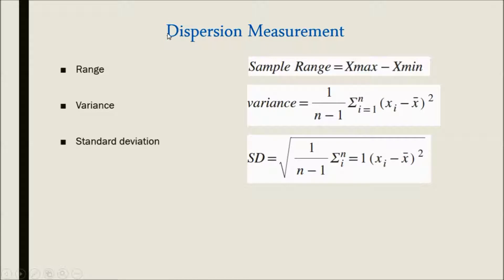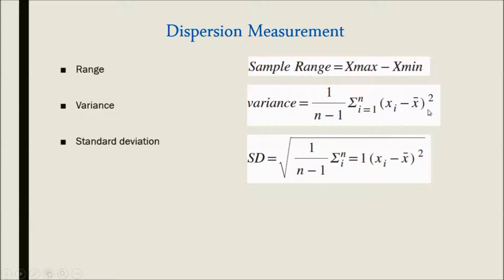In dispersion measurement of any random variable, the range can be calculated as: range is equal to x_max minus x_minimum. If suppose any values 1 to 10, maximum value minus minimum value will give the range. Variance is equal to 1 upon n minus 1, summation i from 1 to n, of (x_i minus x_bar) squared. And standard deviation is the square root of variance.